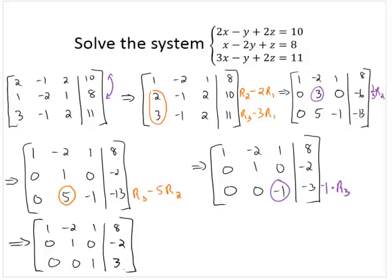So we now have row echelon form. We've got 1's on the diagonal, 0's below it. And we can immediately tell the value of z. Because looking at the third row, that tells me 0x plus 0y plus 1z is 3. And that implies that z is 3.